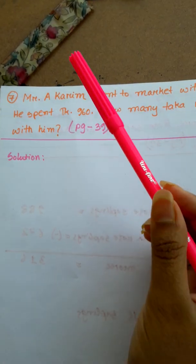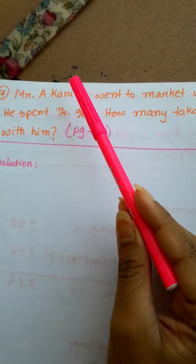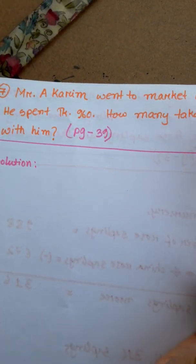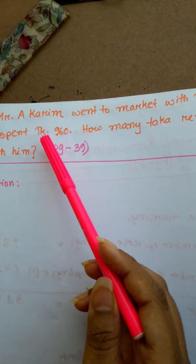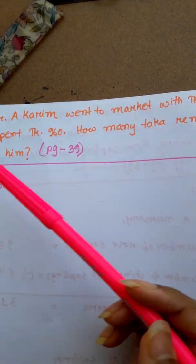Now the next math is number 7, page 39. Mr. Kurim went to market with Taka 1,250. He spent Taka 960. How many Taka remained with him?